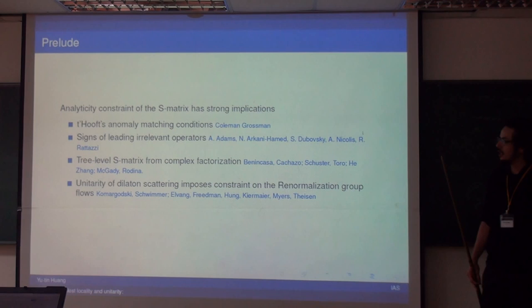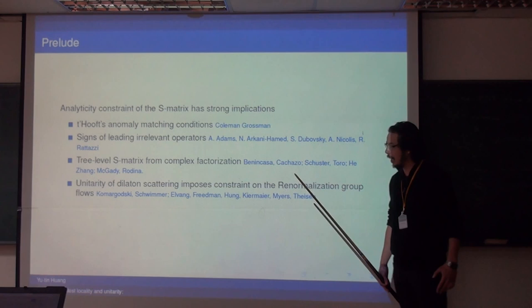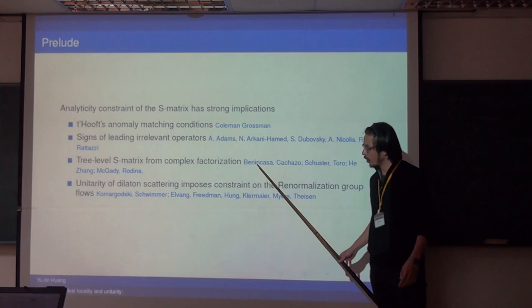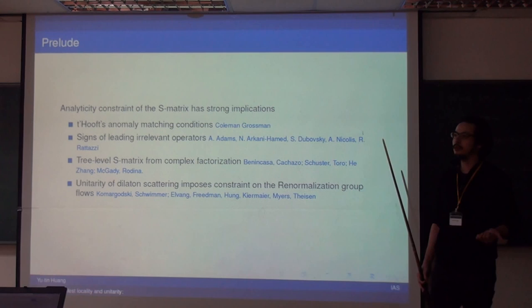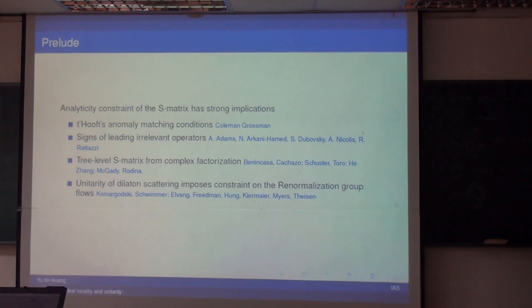Actually, that question has been answered in various cases a long time ago. The 't Hooft anomaly matching condition was shown as a consequence of unitarity of the S-matrix by Coleman and Grossman in 1982. There are also implications from analytic constraints — for example, signs of leading irrelevant operators in an EFT must be positive for the theory to be UV-completable. A lot of work shows the complete S-matrix of a massless theory can be completely fixed by global symmetry and consistent factorization, and the recent proof of the C-theorem using unitarity of the S-matrix.